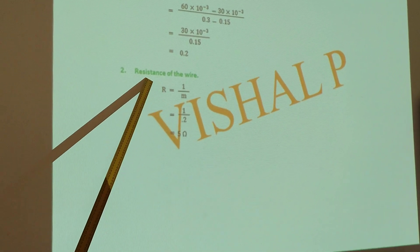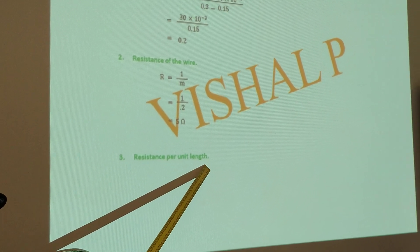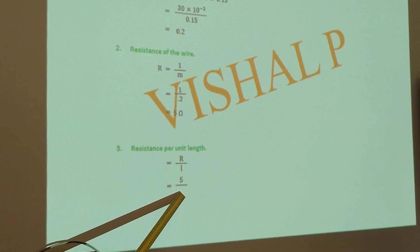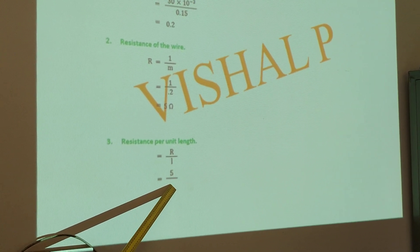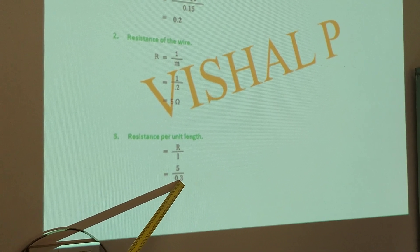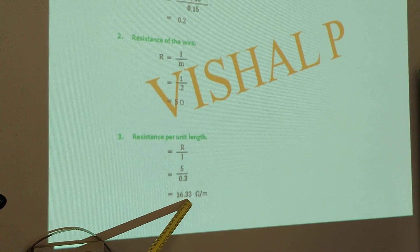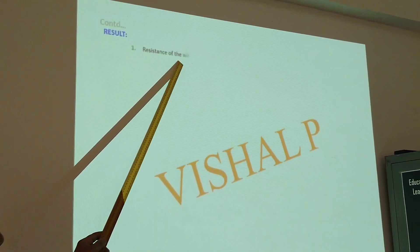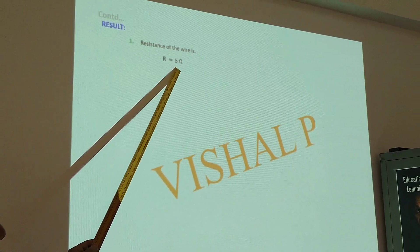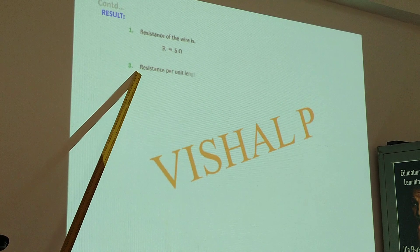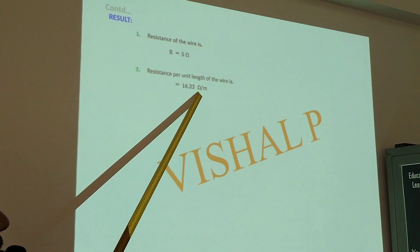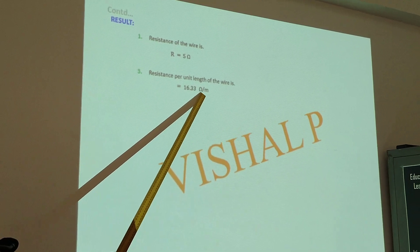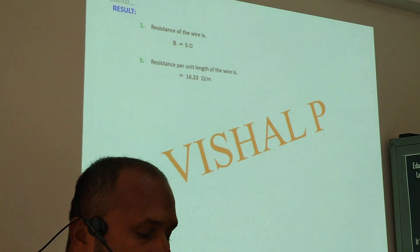This is 5 ohm — that is the SI unit of resistance. Third, resistance per unit length: R divided by L. The value of L is 30 centimeter. Since 5 is in SI units, you will also convert 30 centimeter to meter — that is 0.3 meter. If you simplify, you get the answer 16.33 ohm per meter. This is your final result. You will write the result: resistance of the wire R equals 5 ohm, and resistance per unit length of the wire equals 16.33 ohm per meter.